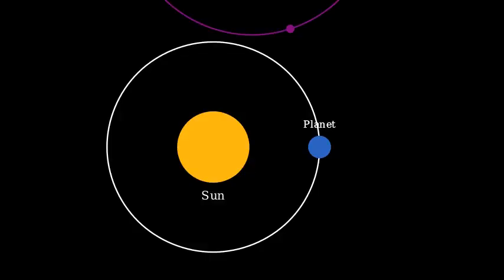To understand this balance more precisely, we need to consider centripetal force. Any object moving in a circle needs a force pulling it toward the center. This is called the centripetal force. The formula for centripetal force is mass times velocity squared divided by radius. For planets, gravity provides exactly this centripetal force.